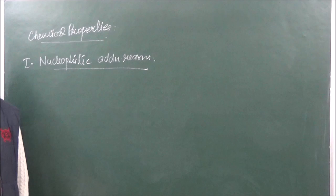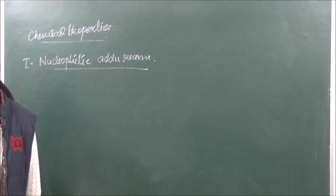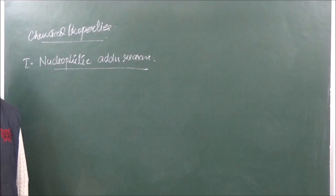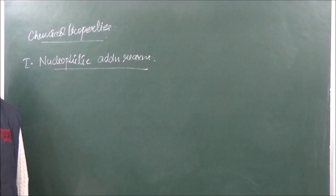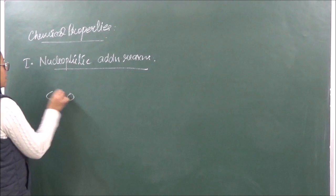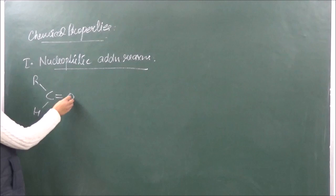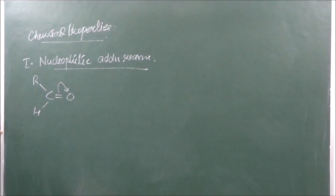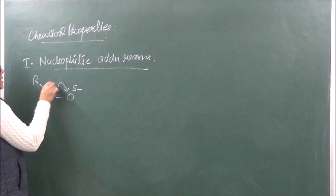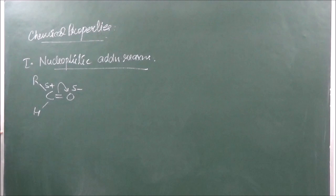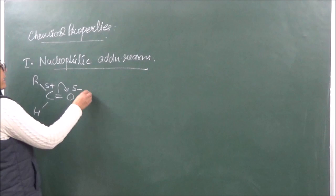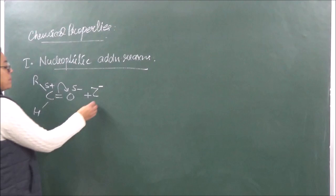Because oxygen is more electronegative than carbon, in a nucleophilic addition reaction the nucleophile attacks at the carbon. A nucleophile is negatively charged - an electron-rich or nucleus-loving species. The pi electron cloud shifts towards oxygen, giving oxygen a partial negative charge and carbon a partial positive charge. A nucleophile Z⁻ then attacks the carbon atom.